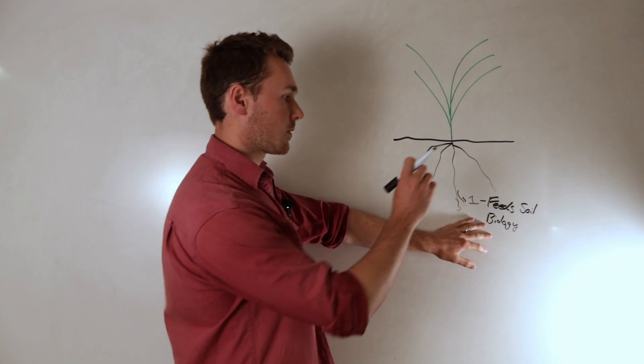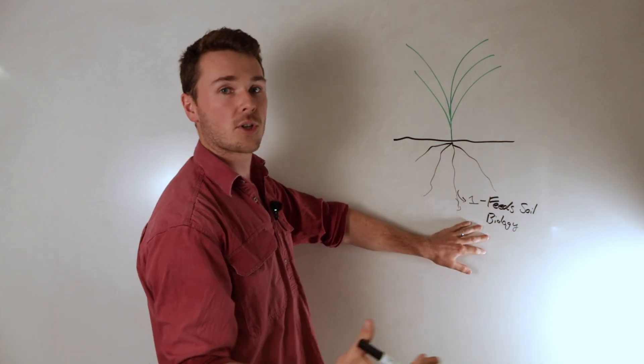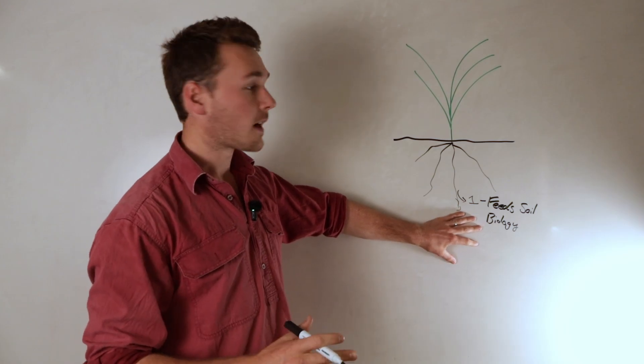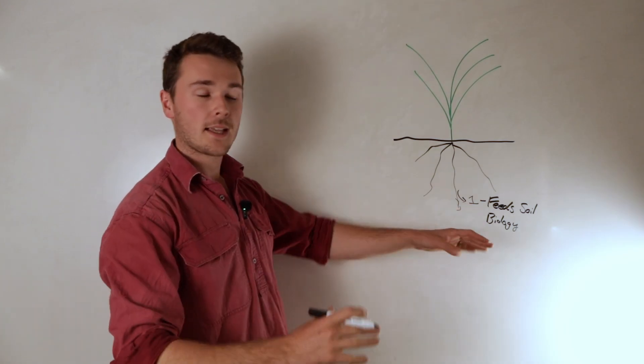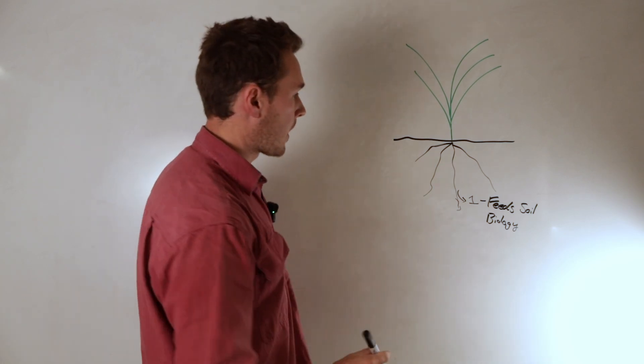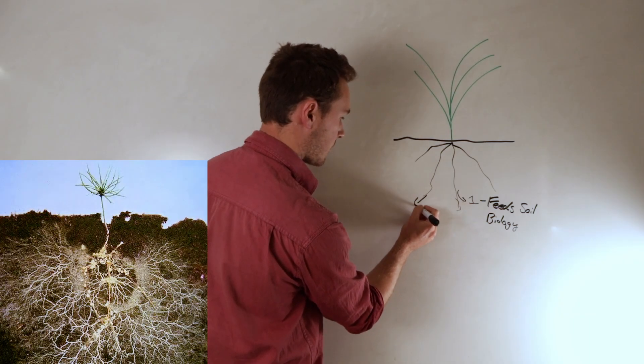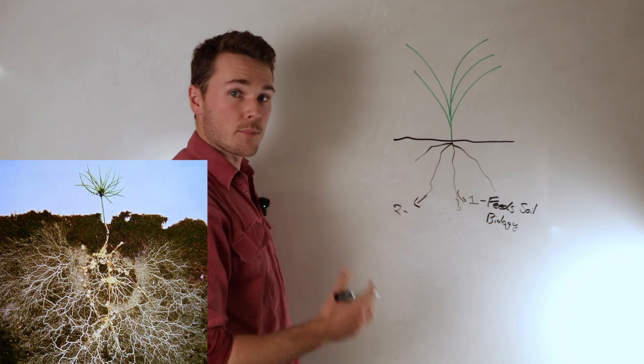The big benefit is that the soil biology then feeds the plant and it can also have a disease suppression effect. This is the most important function that root exudates have - simply building a very robust and aggressive biology around its root zone.